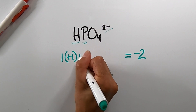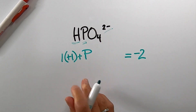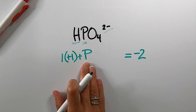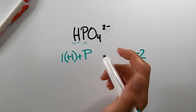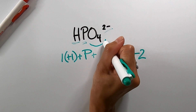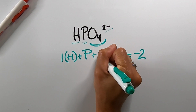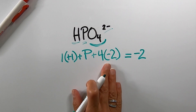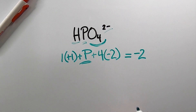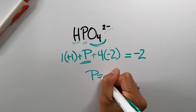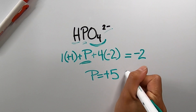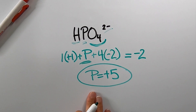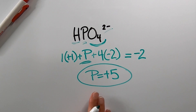We have 1 phosphorus, so we'll do 1P and use its chemical symbol as the variable since that's what we're solving for. Plus we have 4 oxygens, so we'll do 4 times negative 2, which is the oxidation number of oxygen. Simply solve for P, and we should get P equals positive 5, which is the oxidation number of the phosphorus atom in this compound. Simple as that, even when you have an overall molecular charge.